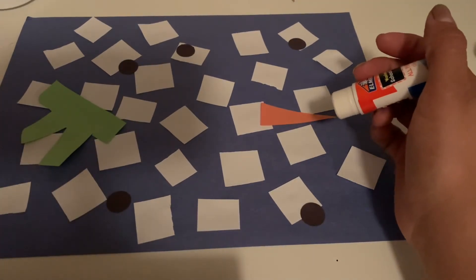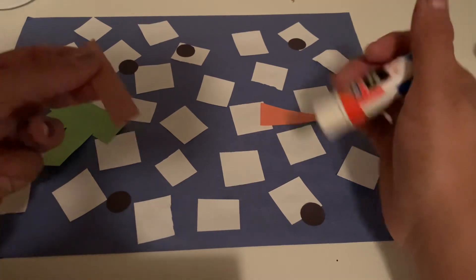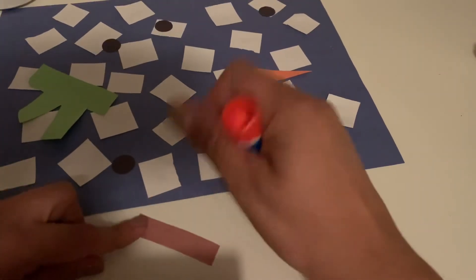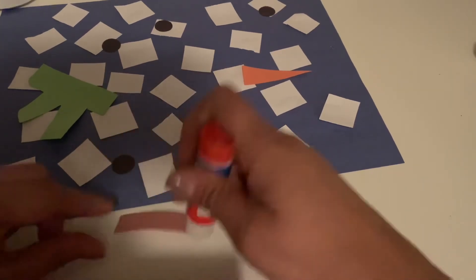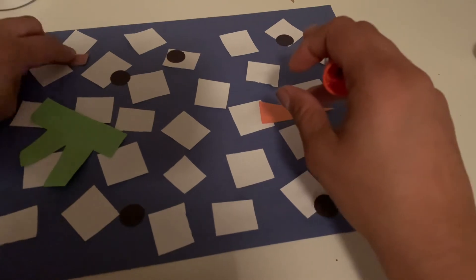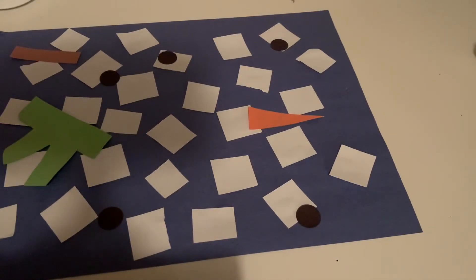But we can't forget his arms. So we need our two brown rectangle pieces. Put glue on and then wherever you want to put his arms. He's melted.